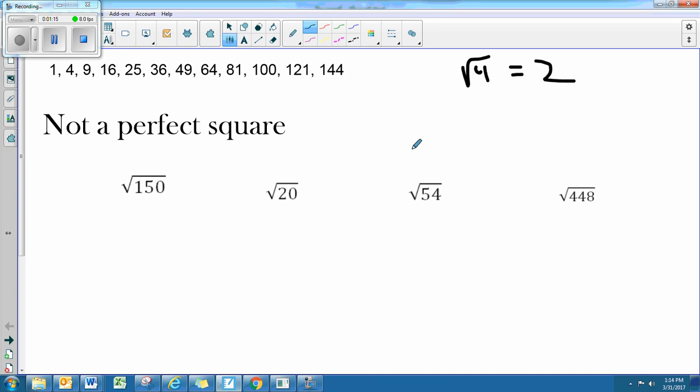When we look at a square root, and we have a square root of a number, when you want to break it down, the first thing you would do is look at the number and think to yourself about any perfect squares that would be a factor of 150.